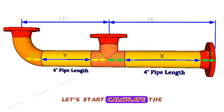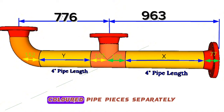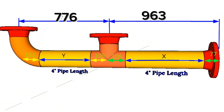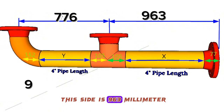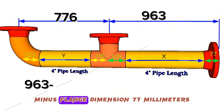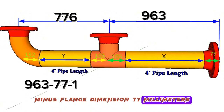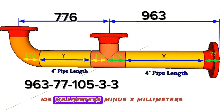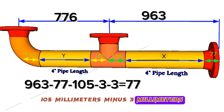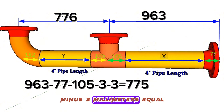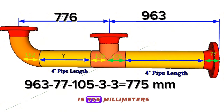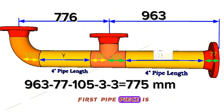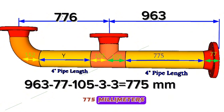Let's calculate the lengths of the two yellow colored pipe pieces separately. For the first pipe piece, the total length of that side is 963 millimeters, minus the flange dimension 77 millimeters, minus the center to end of the equal pipe tee 105 millimeters, minus 3 millimeters gap, minus 3 millimeters gap, equals 775 millimeters. The length of the first pipe piece is 775 millimeters.